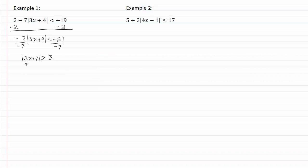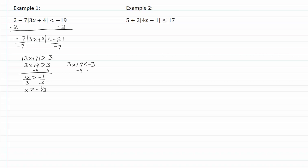Set up our two equations. One will be exactly as it's written. This is a greater than, so remember that's going to be going off the two sides, and we have three x plus four is going to be less than negative three. Don't forget to change the inequality on the second equation. We'll subtract four from both sides and we get three x is greater than negative one; divide by three, so x is greater than negative one-third. Solve the other equation and we get three x is less than negative seven; divide by three, so x is less than negative seven-thirds.